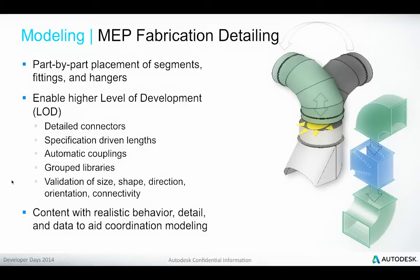Another important modeling area is the new MEP fabrication detailing functionality. The Revit API now supports part-by-part placement of segments, fittings, and hangers, enabling a higher level of development with detailed connectors, specification-driven lengths — meaning a single length of duct can be separated into individual parts as needed for fabrication specifications. Couplings can be automated, libraries with grouping are defined, and validation of size, shape, direction, orientation, and connectivity is supported, with a user interface enabling direct interaction with realistic behavior.